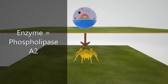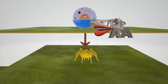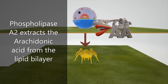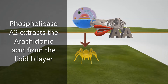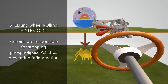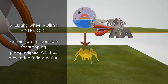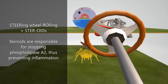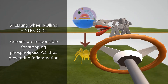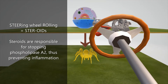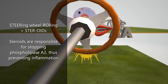The enzyme which frees arachidonic acid from the cell lipid bilayer is phospholipase A2. We have a fossil with lips and two A's ripping the spider off the phospholipid bilayer to help remember that phospholipase A2 extracts arachidonic acid. Then comes along a rolling steering wheel that explodes the fossil with lips and two A's — the rolling steering wheel representing steroids, which is what blocks phospholipase A2. That is exactly how steroids work as anti-inflammatory agents.